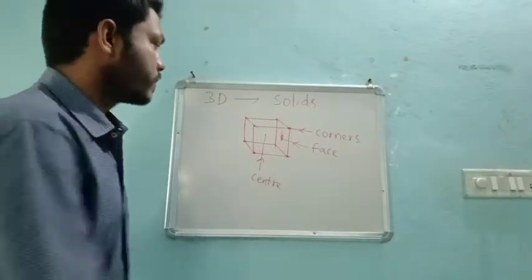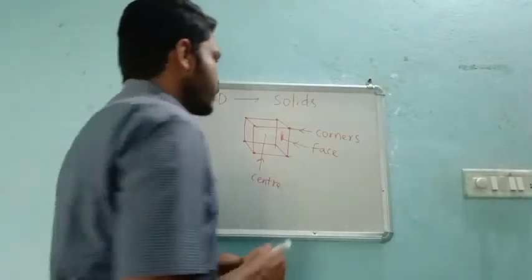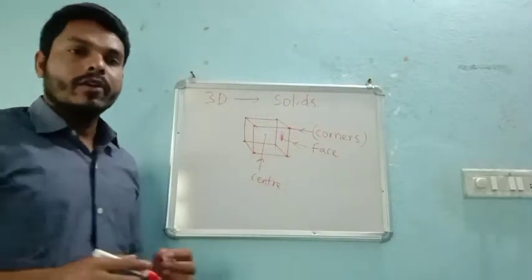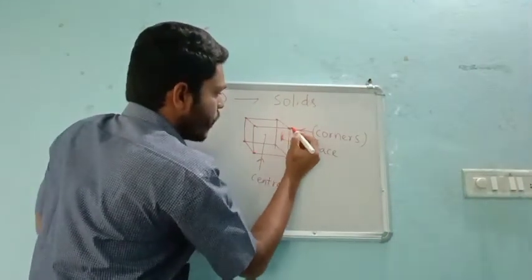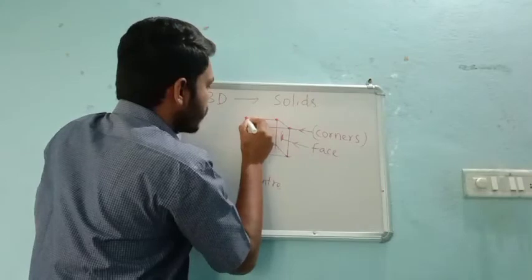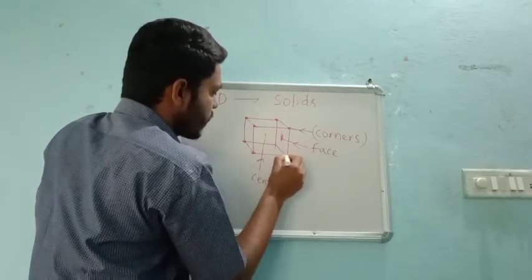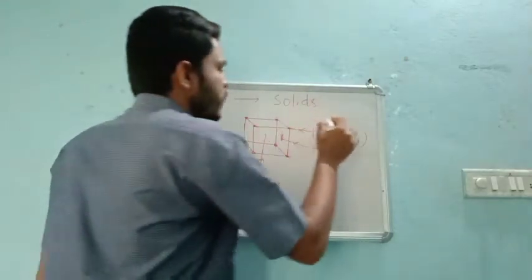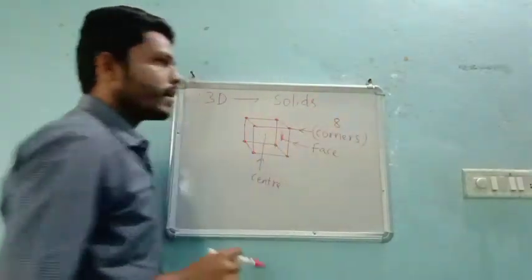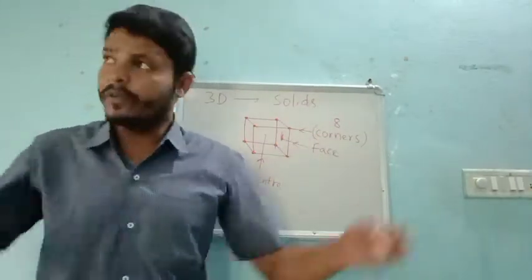If we see the corners, there are eight corners in a cube — one, two, three, four, five, six, seven, eight. The number of corners present in a cube is always eight.